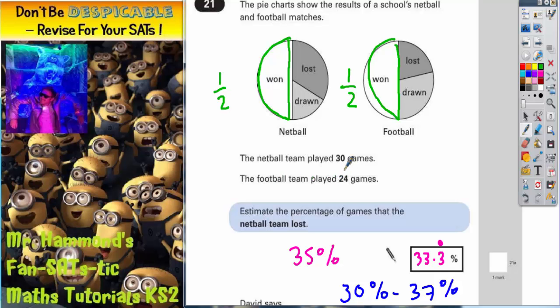Because for netball, they played 30 games. So they won a half of 30 games. Half of 30 is 15. So netball won 15 games. The football team won a half of 24. And a half of 24 is 12 games. So actually,